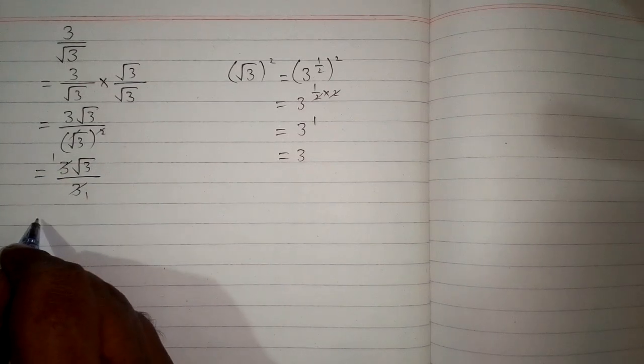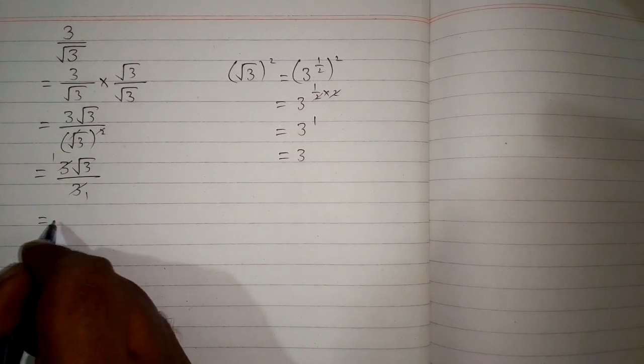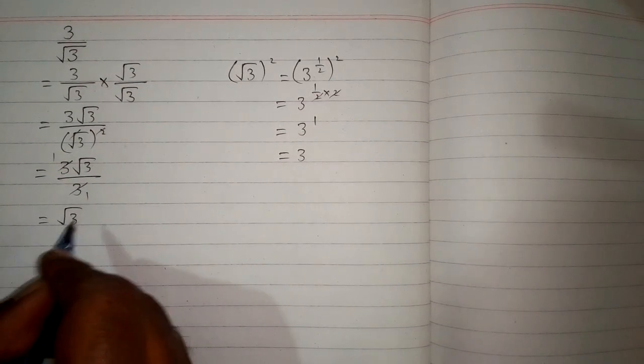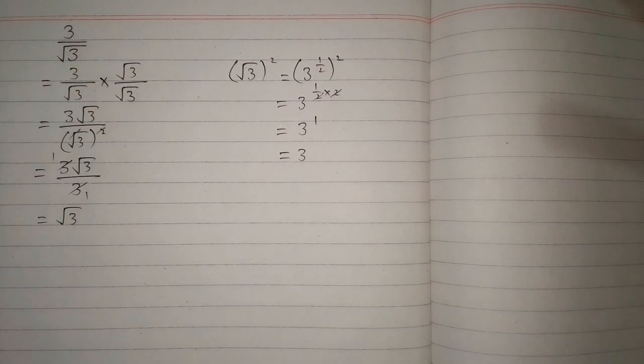Now we can cancel this 3 and this 3, so the final answer is the square root of 3.